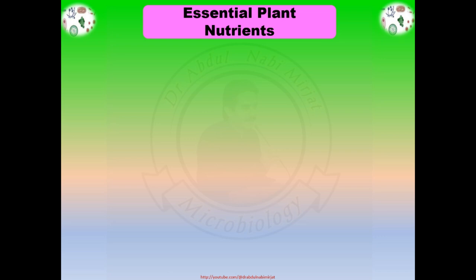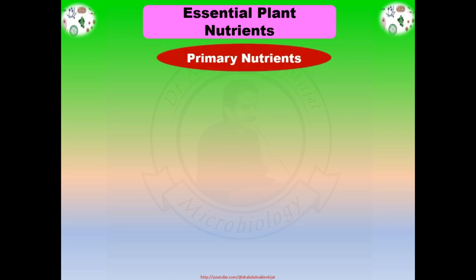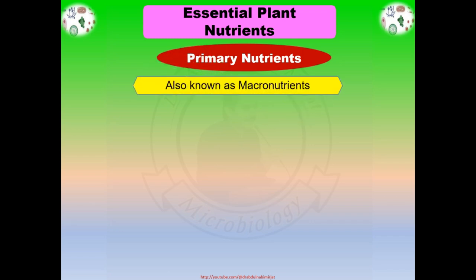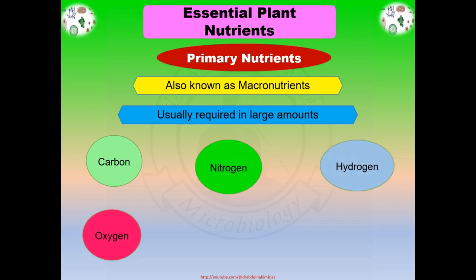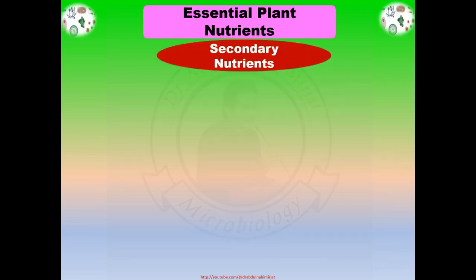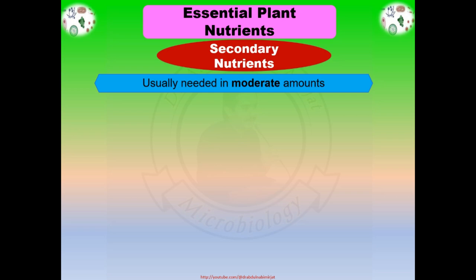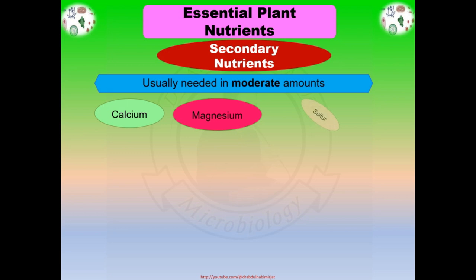These nutrients consist of primary nutrients, also known as macronutrients. Primary nutrients are usually required in large amounts and include carbon, nitrogen, hydrogen, oxygen, phosphorus, and potassium. Secondary nutrients are usually required in moderate amounts compared to the primary essential nutrients. The secondary nutrients are calcium, magnesium, and sulfur.